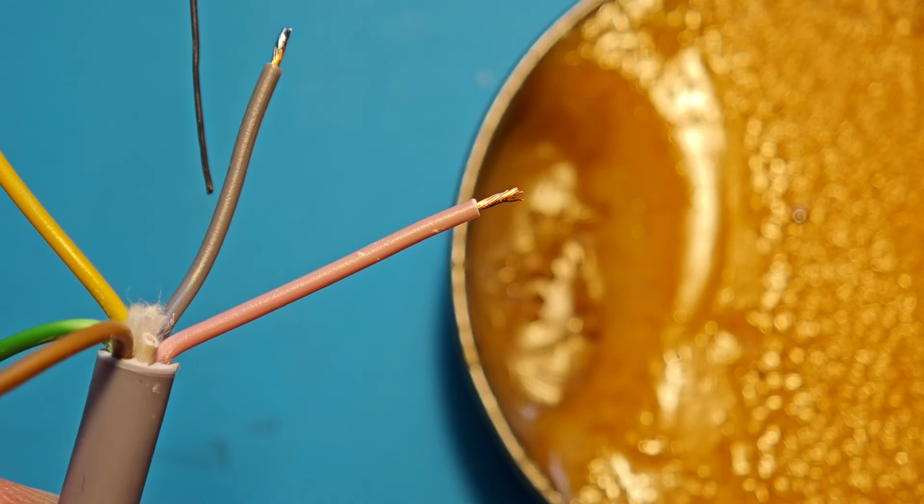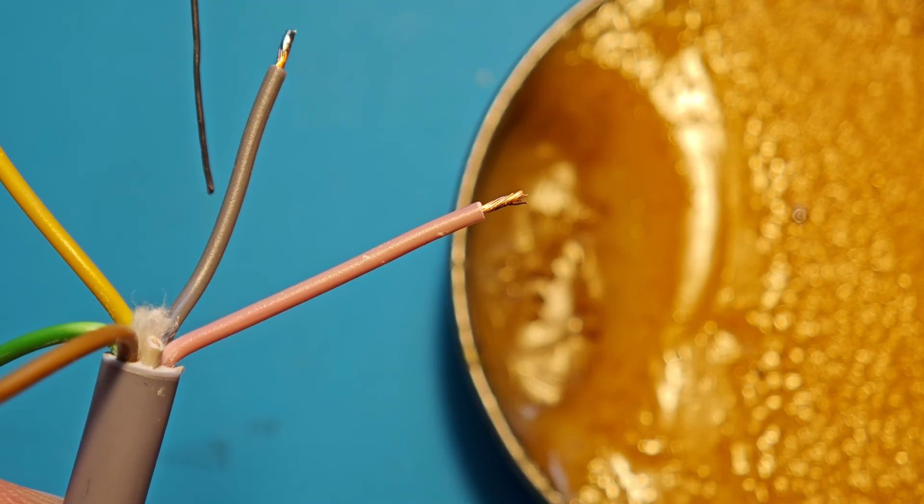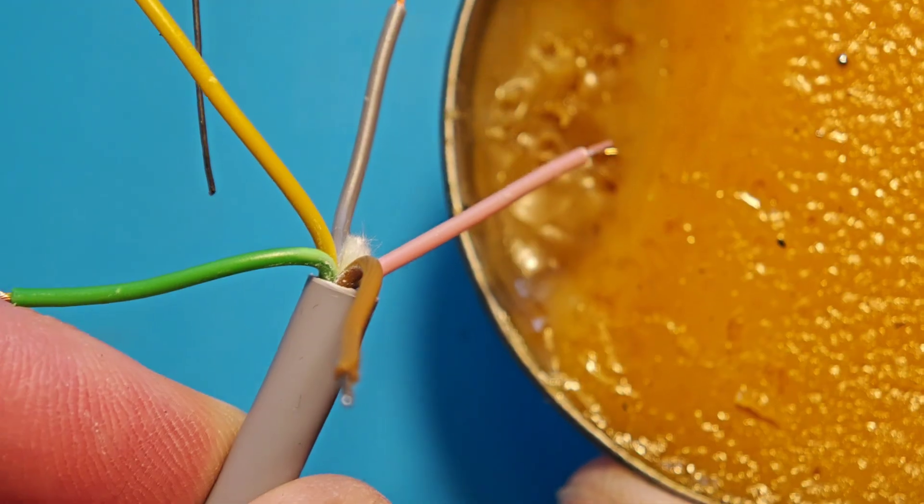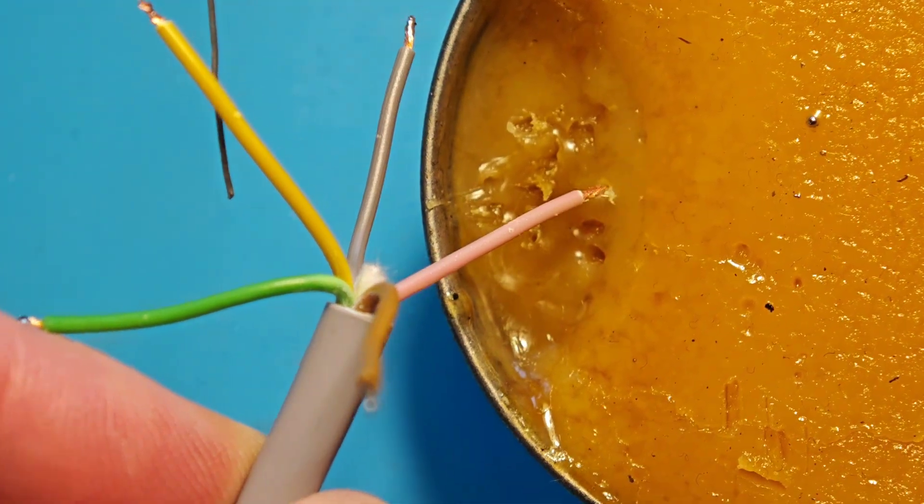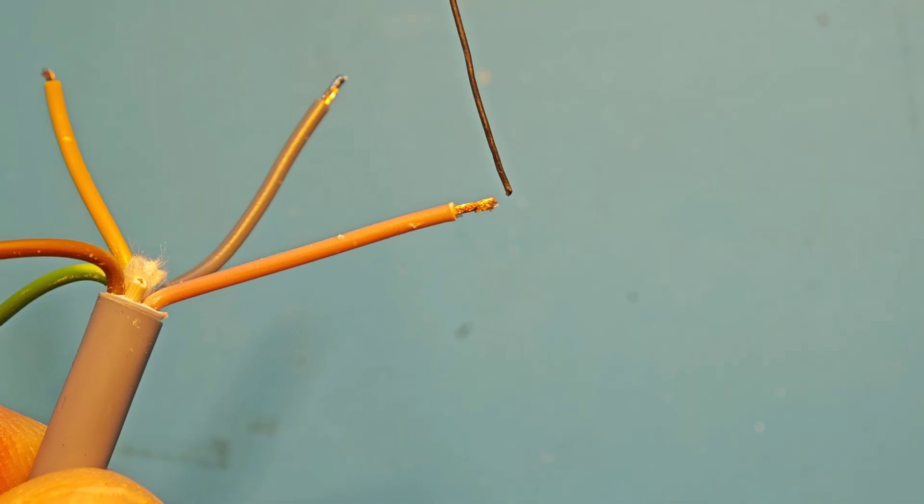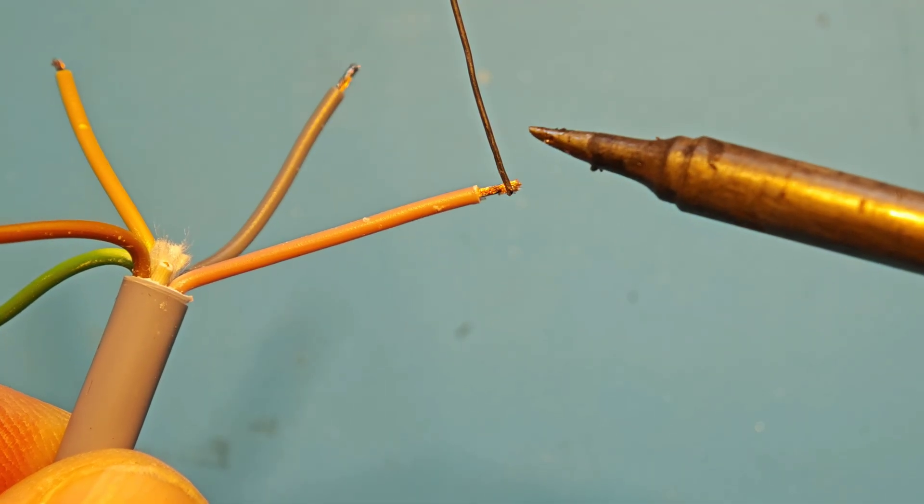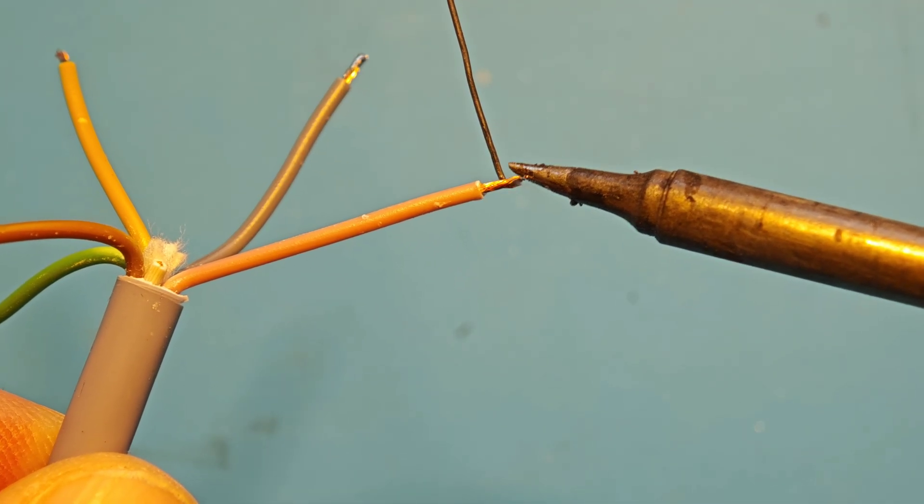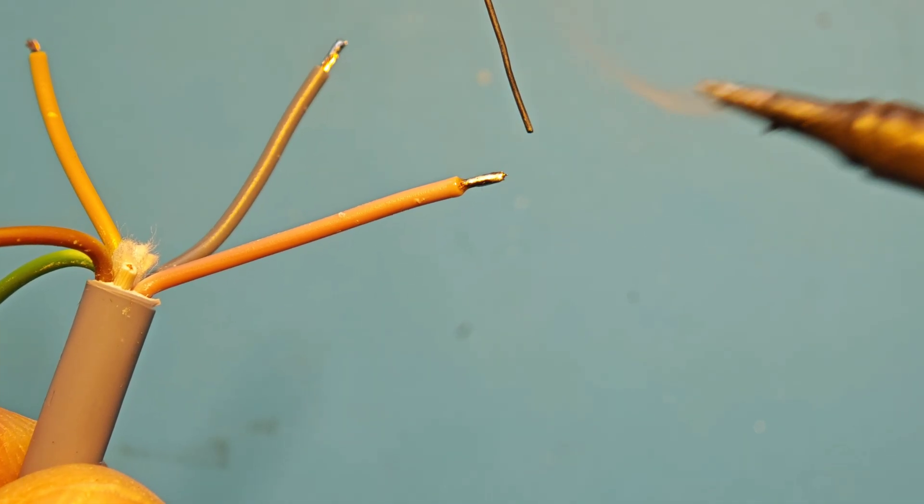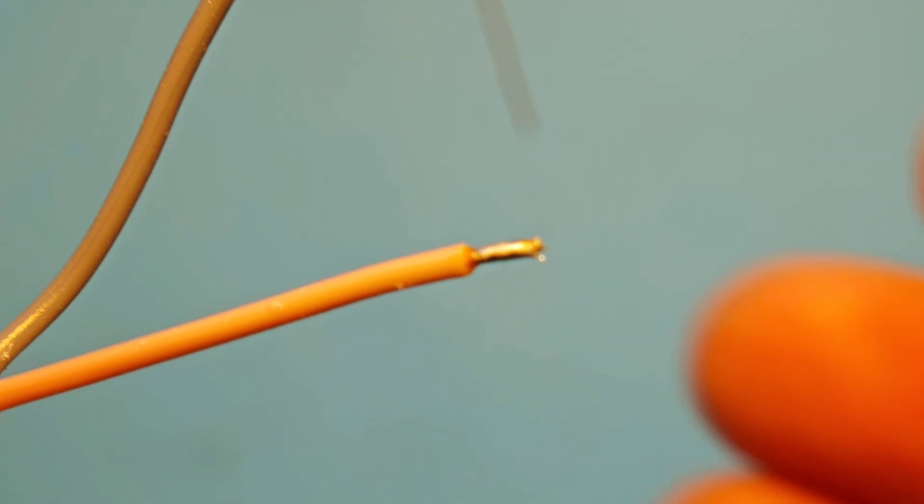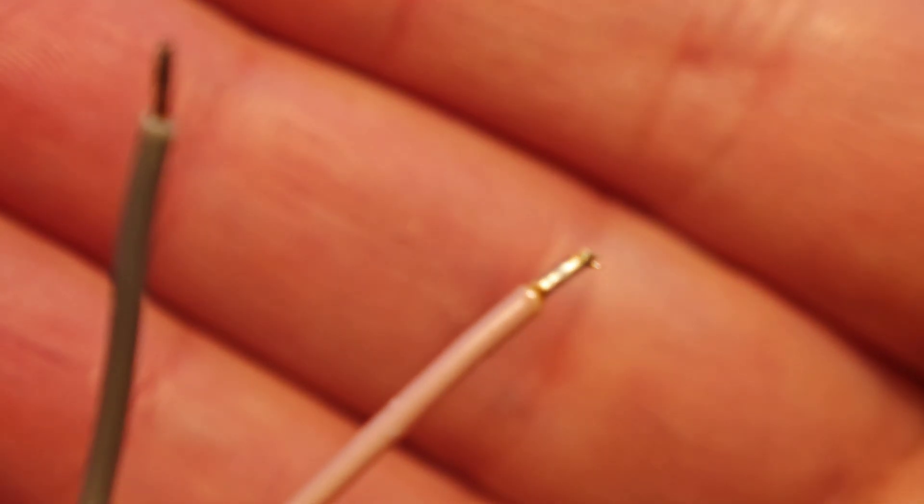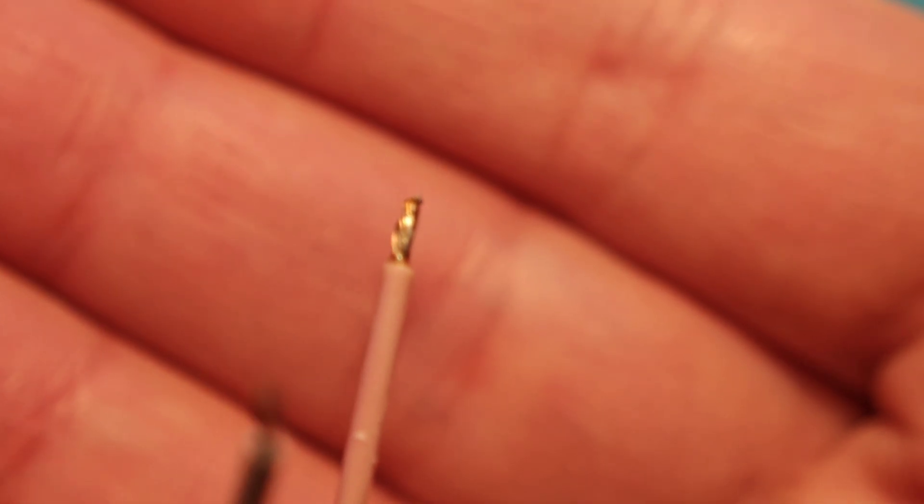Now, let's see what happens when we apply flux to the copper wire and try to solder it. Here you can see that the solder has nicely spread across the entire copper wire.